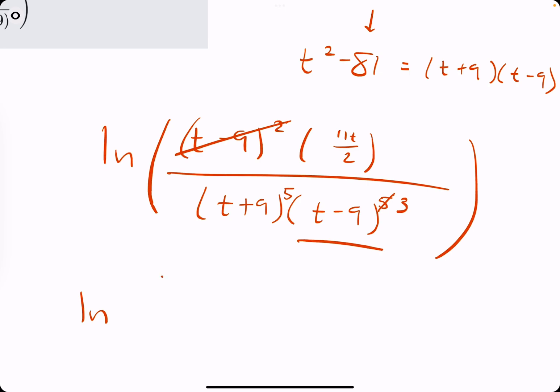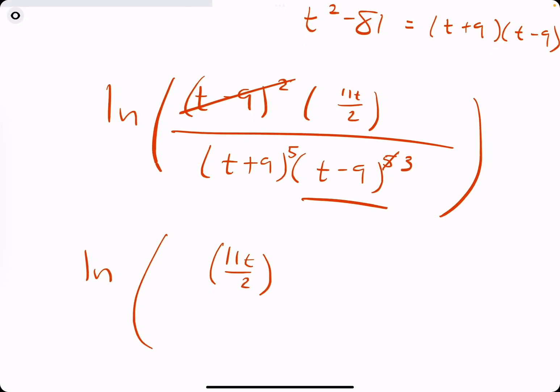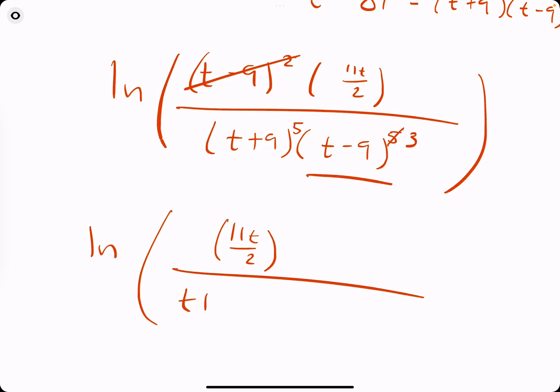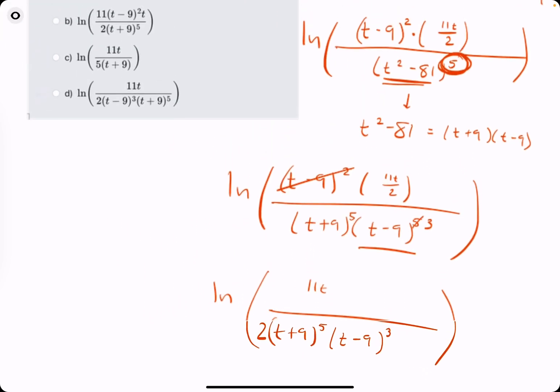So this is what we're left with. We're left with ln of 11t/2 in the numerator, all over (t + 9)^5 times (t - 9)^3. And what they will also do, so that we don't have a fraction in the exponent, they're going to get rid of the 2 from the denominator of the exponent and really just throw it into the actual denominator.